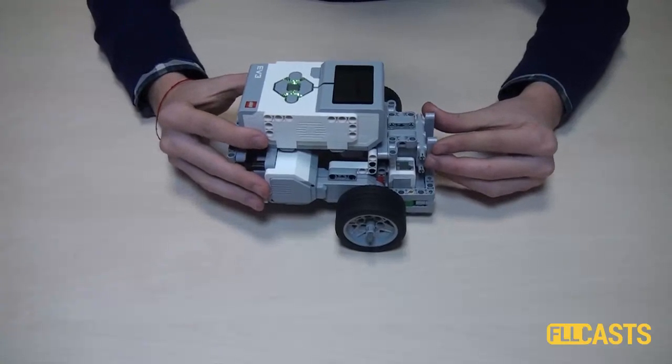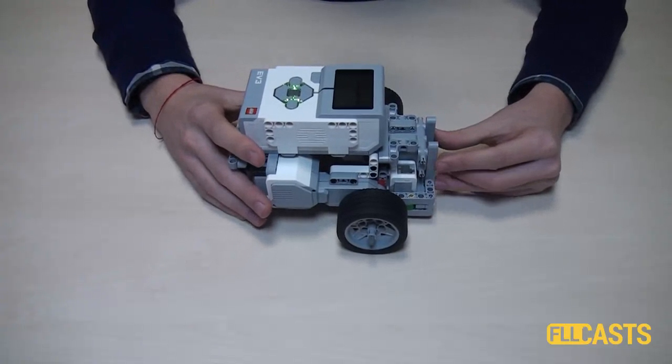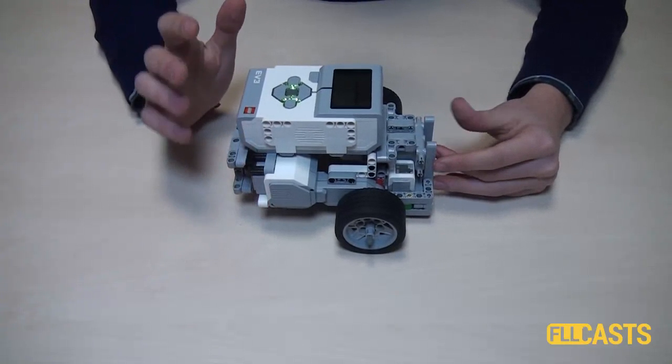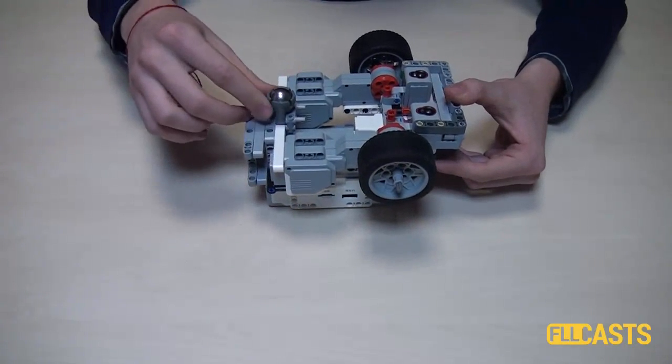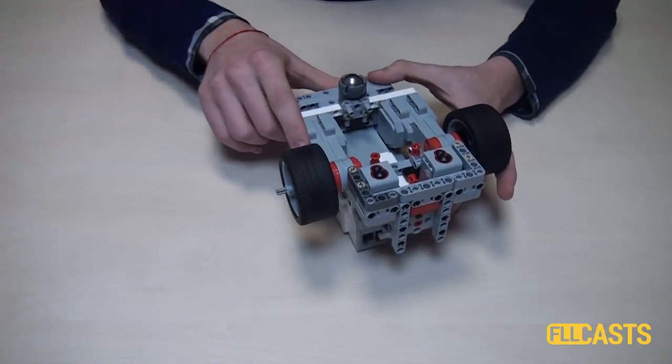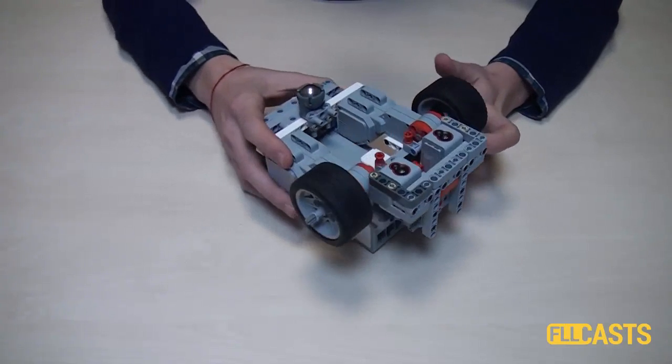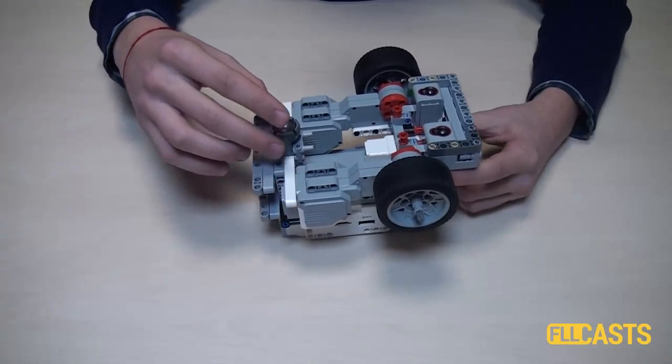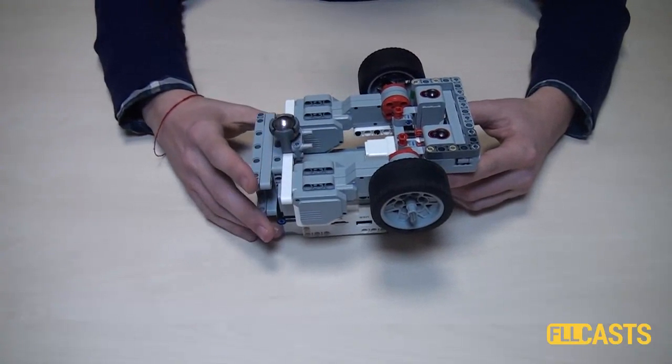I found this EV3 construction on the internet and it's quite a good start for your robot. Still there is space for improvement and we'll begin with the back wheel. As you may notice it is quite unstable and this is due to the fact that it is attached with just these two pins here. This makes the weight fall on them and makes the whole construction unreliable.